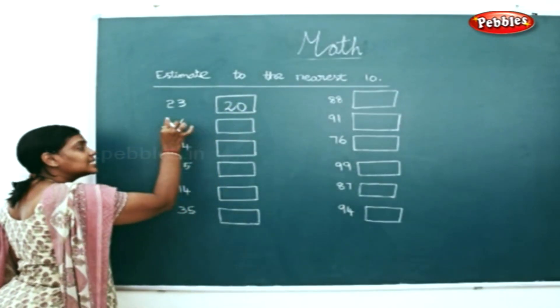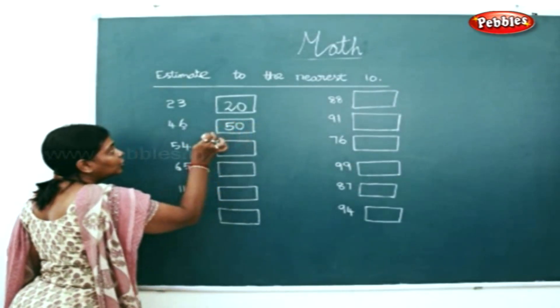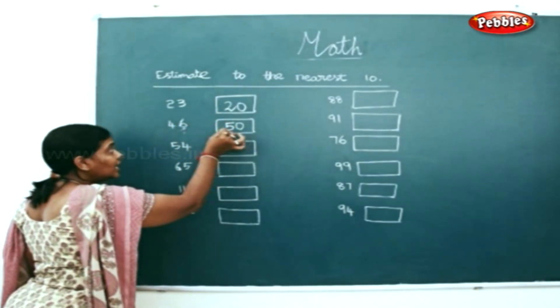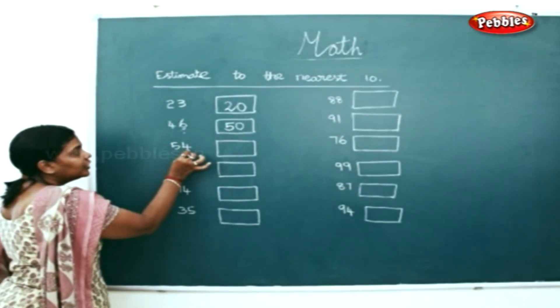46. So it is 6, it's gone up, so we will write it as 50. We will not write 40. If it is 45, we will also write 50. 46, we will also write 50. If it is 43, we will write 40.